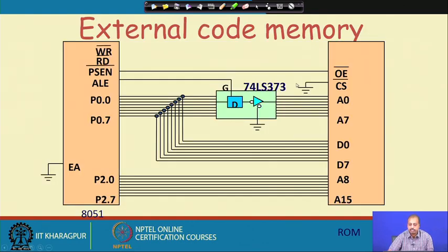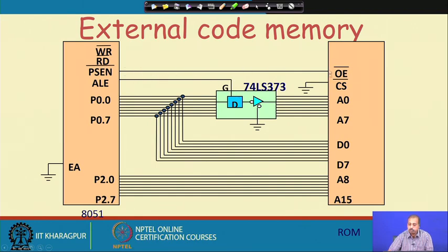For external code memory connection: the higher order address bus is provided by Port 2 (P2.0 to P2.7 connected to A8 to A15). Port 0 provides the multiplexed address/data bus — these 8 bits are connected to the data bus of both the RAM chip and ROM chip, and also go to the 74373 latch where the lower order address is demultiplexed by the ALE signal. The ALE signal is connected to the G pin of the 74373. PSEN bar is connected to OE bar, CS bar is grounded, and EA bar is grounded.